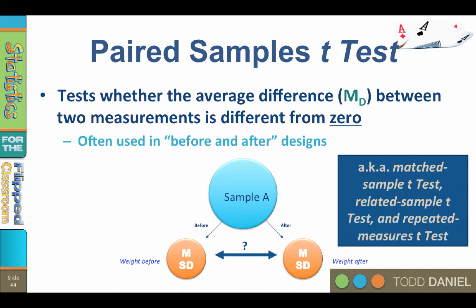Why so many names? Statistics developed in many places around the world — Germany, Russia, America, Britain. Statisticians in each country gave the mathematical formulas different names, and sometimes those names were translated into other languages. In the end, we have been handed down many names from many traditions for exactly the same thing. The important thing to remember is that the assumption for an independent measures design is that the groups are independent. If your groups are not independent, then you will use the repeated measures design. Those are your only two options, regardless of what names they go by.